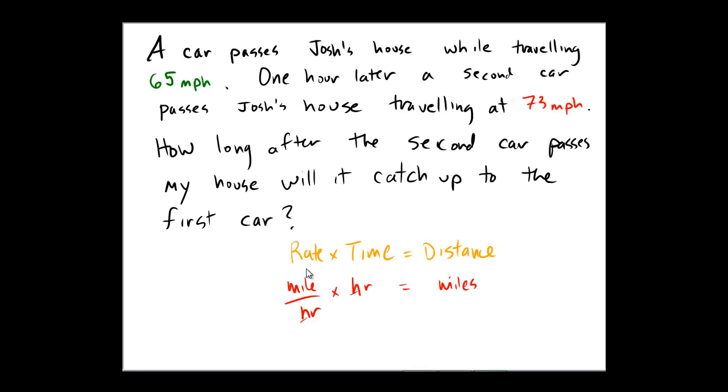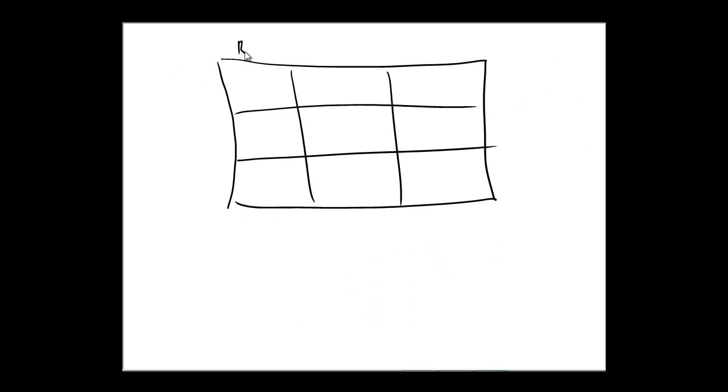I'll make myself a chart. I always do three by three because I can never tell when I'm going to need a total or not. Since the formula is rate times time equals distance, on this screen I'm going to put rate, time, and distance as my columns.